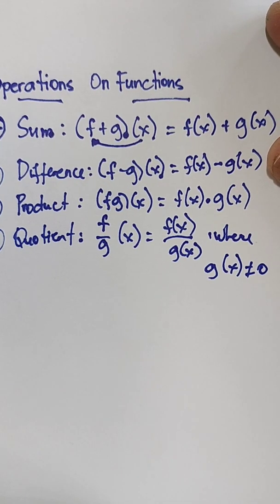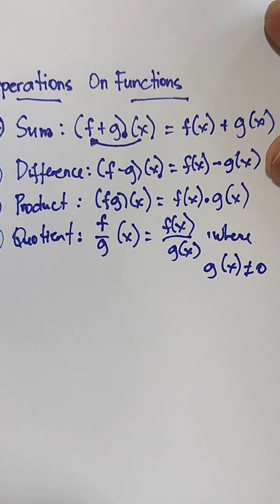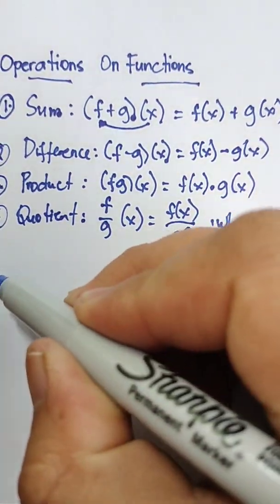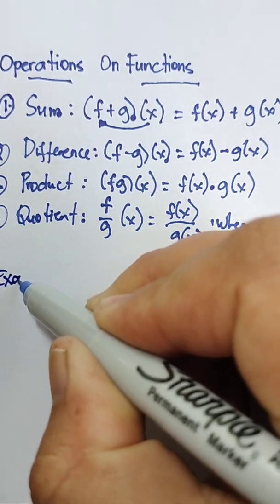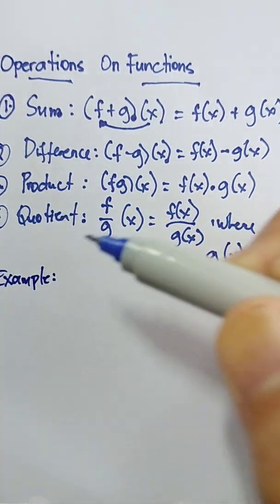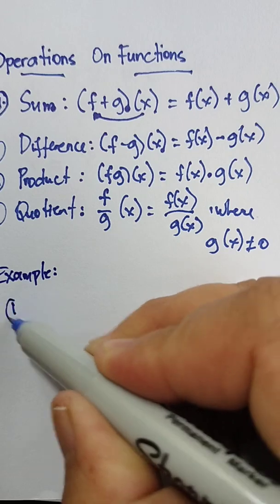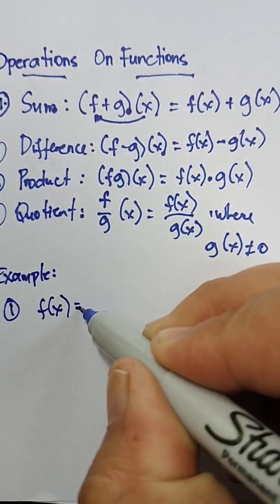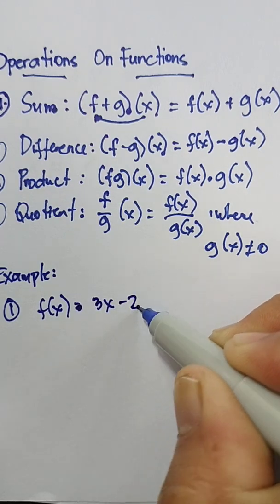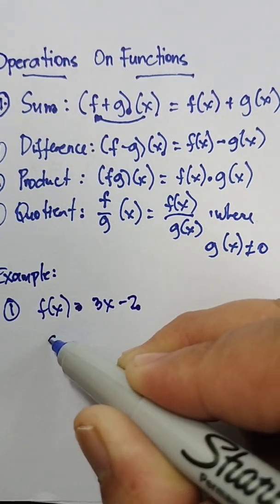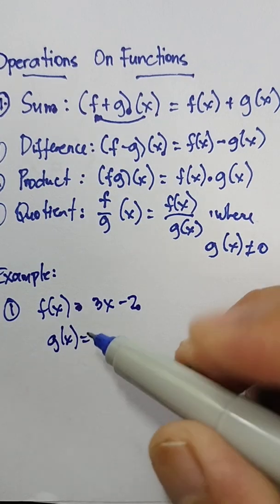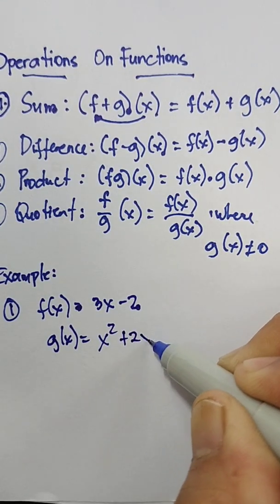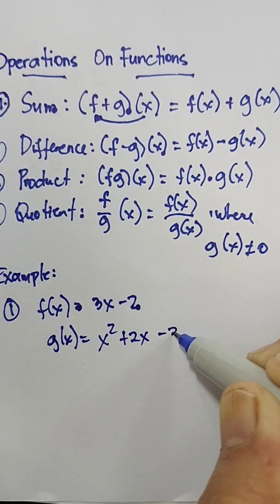So okay, for example, number one, if we have f of x equals 3x minus 2, and g of x is x squared plus 2x minus 3.